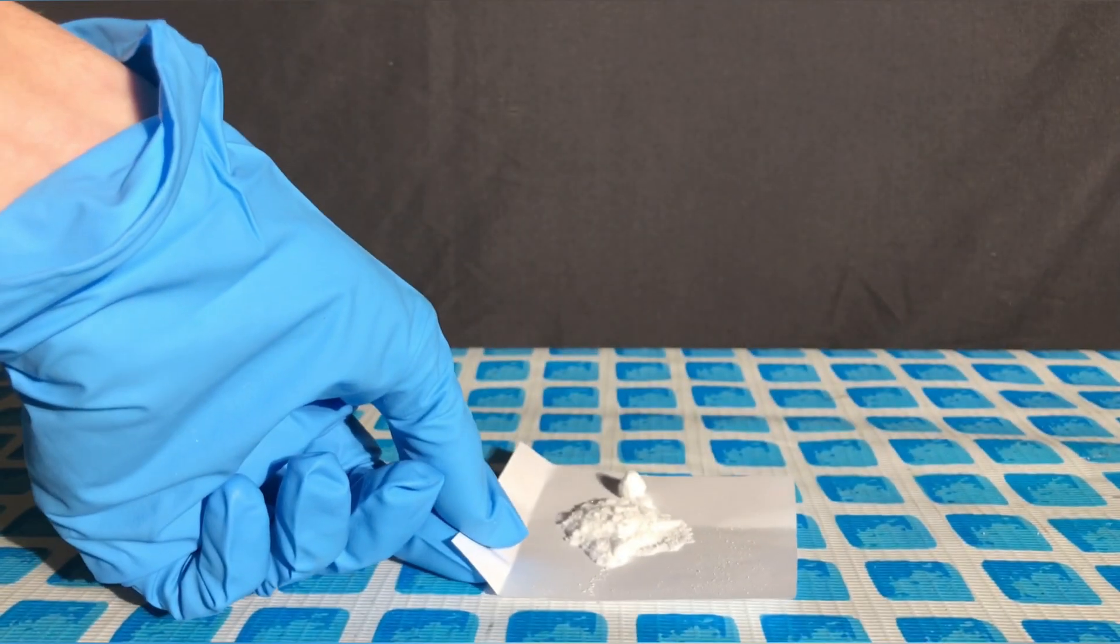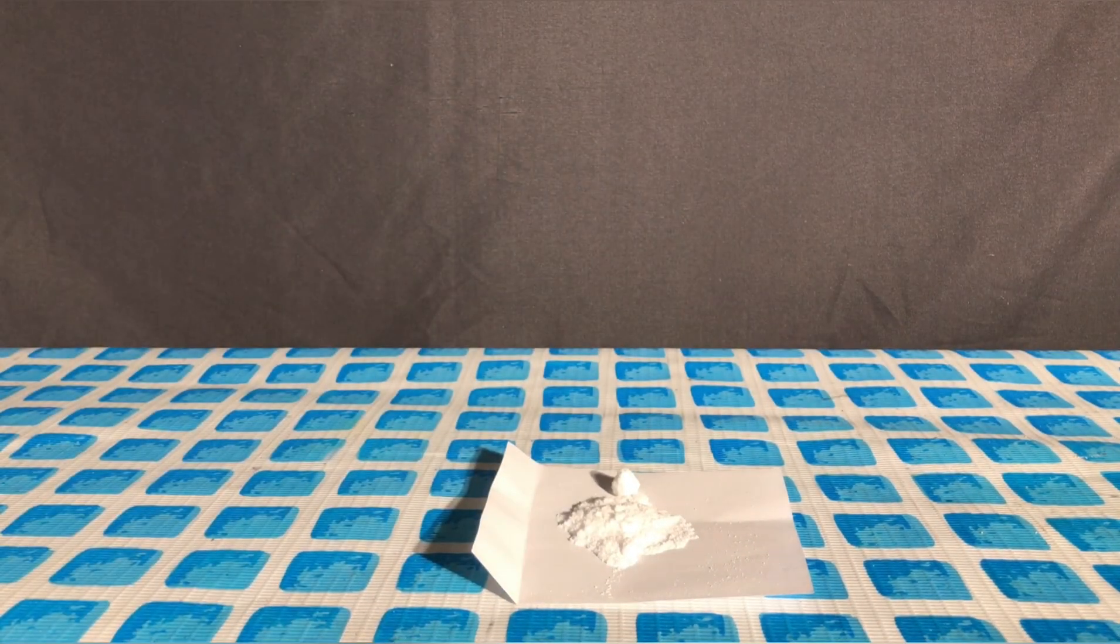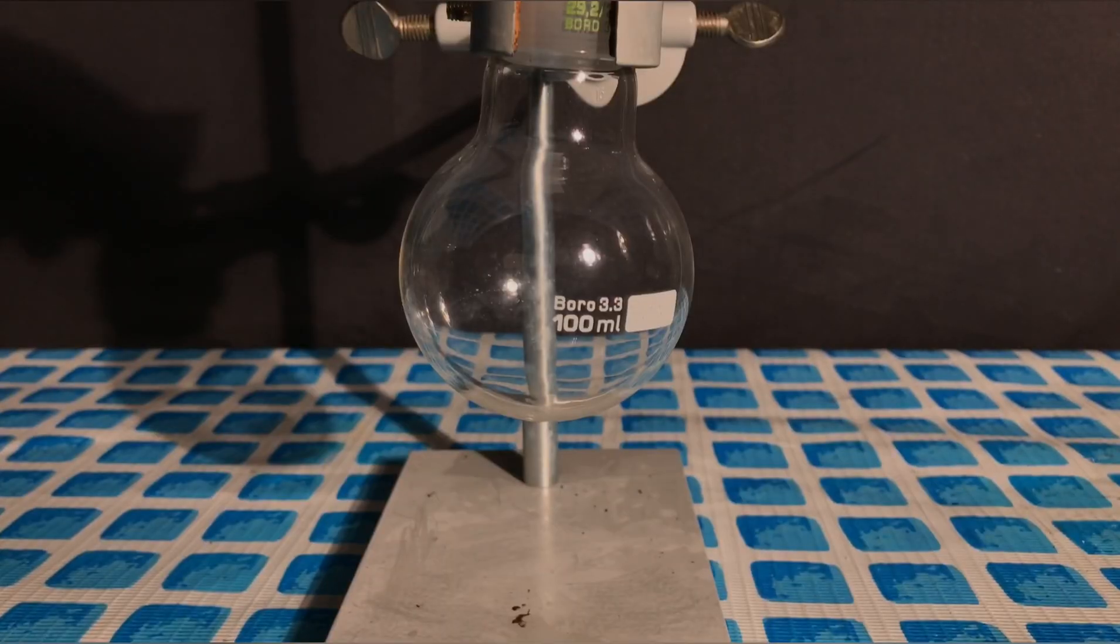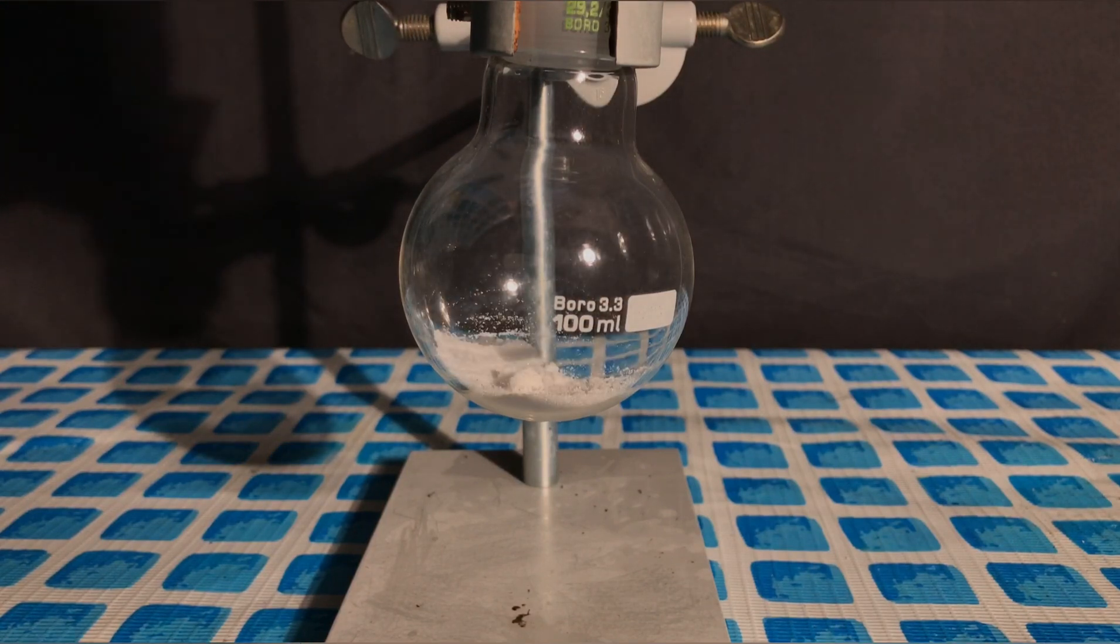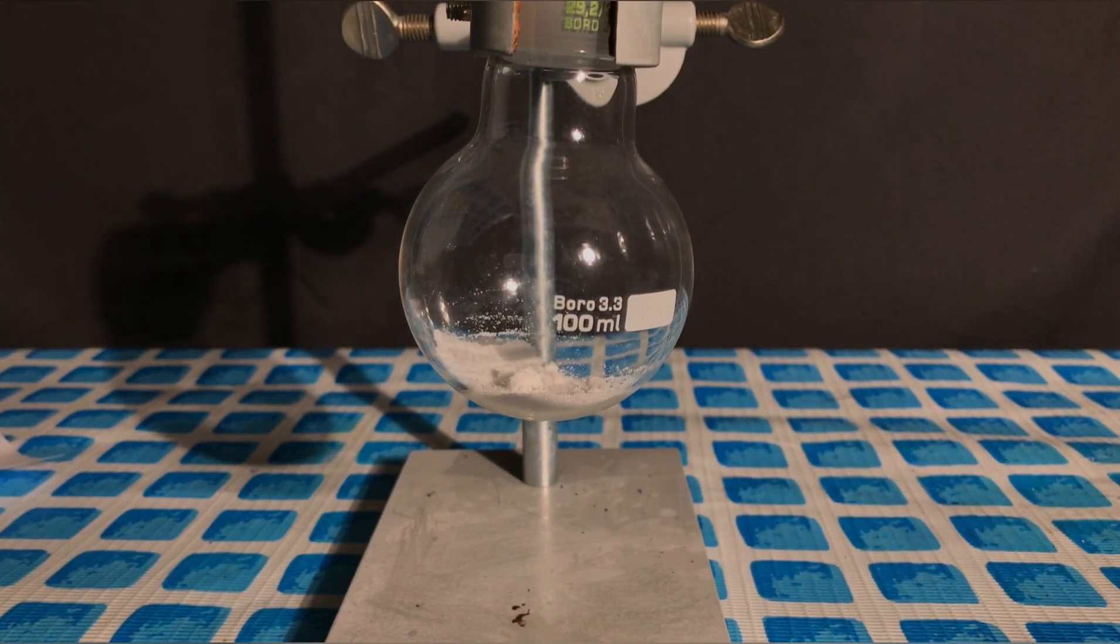To start off, the toxic lead-2-nitrate, which looks basically like most other chemicals, was weighed out. Afterwards, all of it was transferred to a 100ml round-bottom flask.